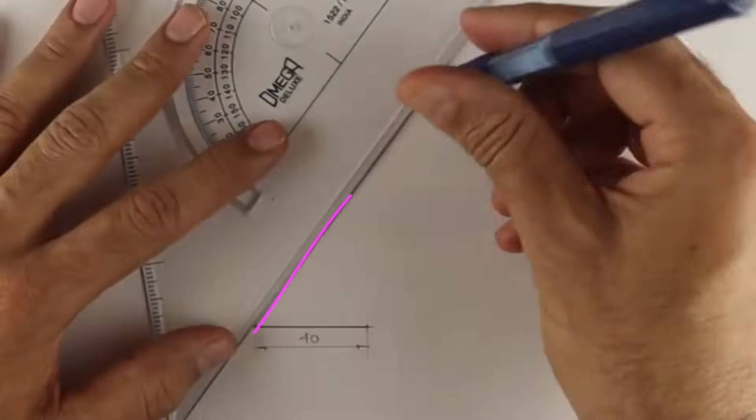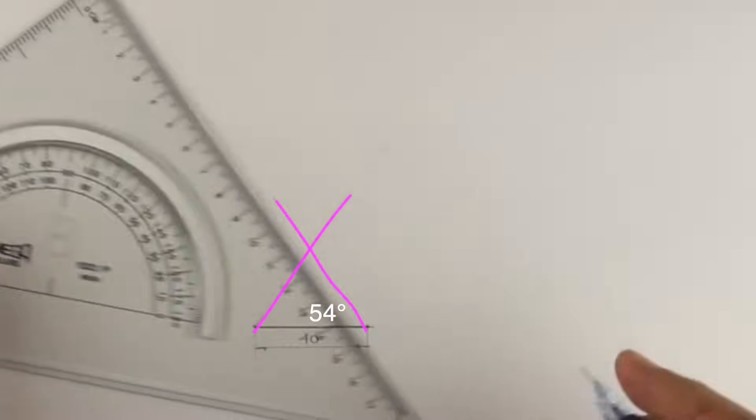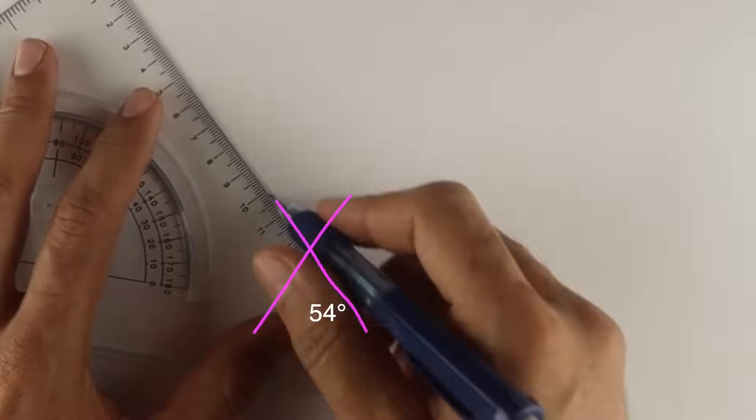You draw a line, then from the other point also you take 54 degrees. Wherever they intersect, that is point O.